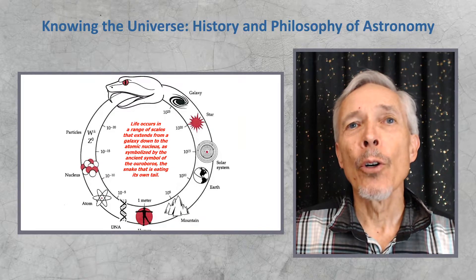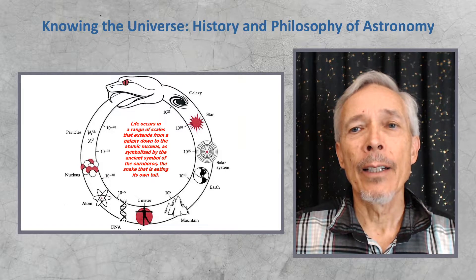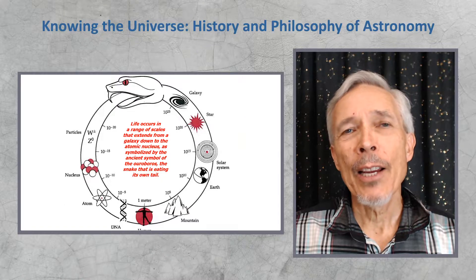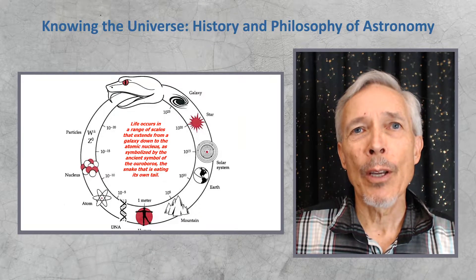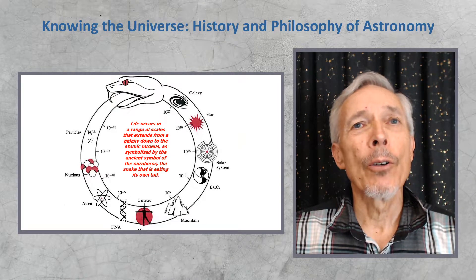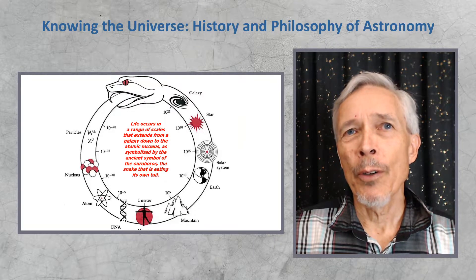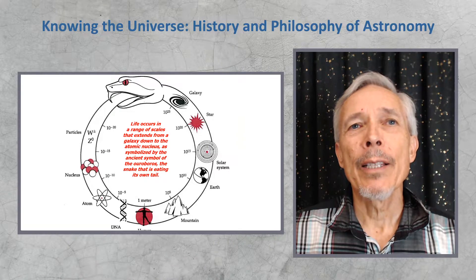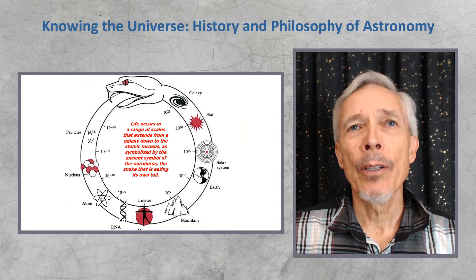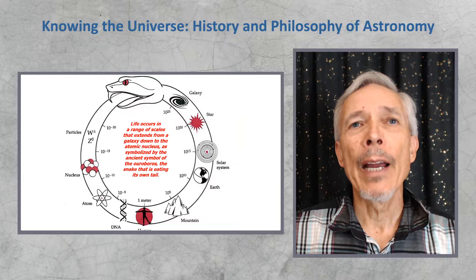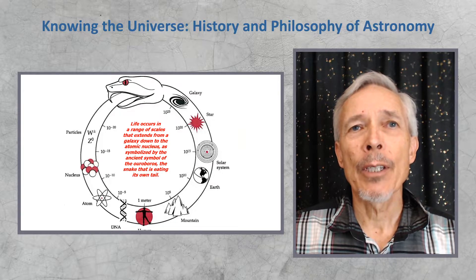This is a symbol called the Ouroboros, the snake that eats its tail. It's a symbol found in ancient cultures dating back thousands of years of the symbiosis or unity of life. Physics has its own version of the Ouroboros, where we can see everything from the tiniest subatomic particles to the visible universe arrayed along the snake in different scales.